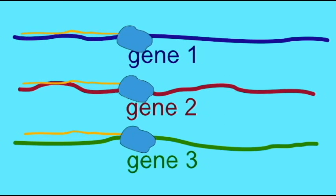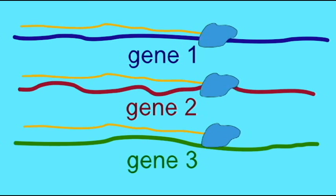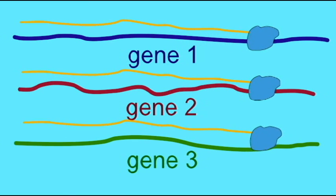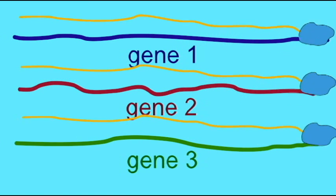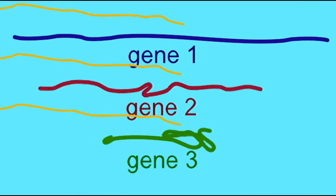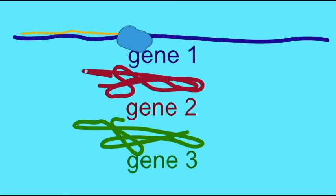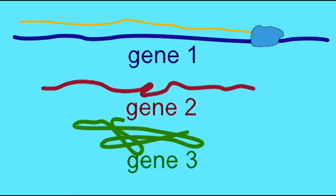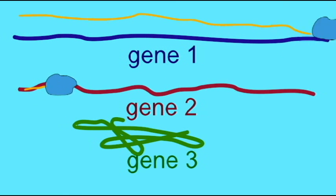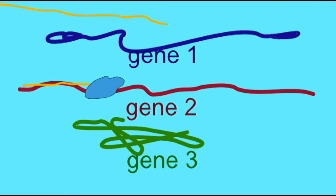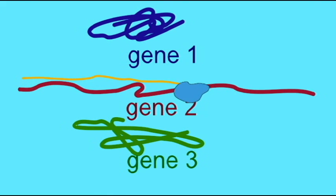In this animation, you can see that these three genes can all be transcribed by RNA polymerase, but only when they are in the loose, unwound form of euchromatin. When they are tightly wound in the form of heterochromatin, then no transcription occurs.